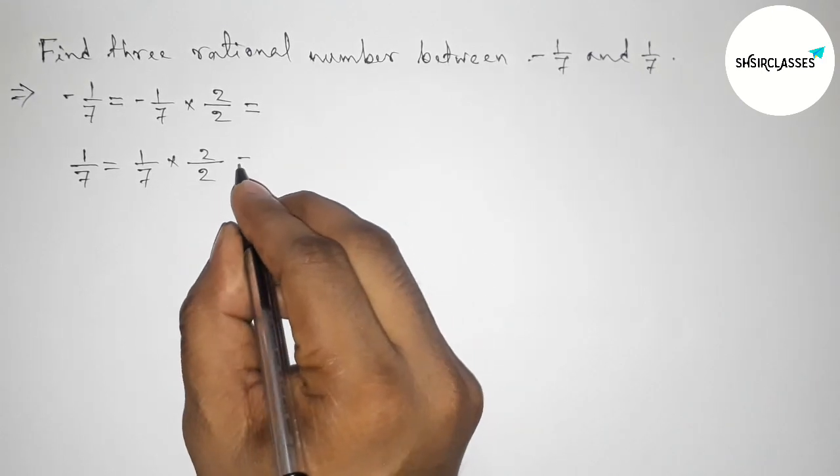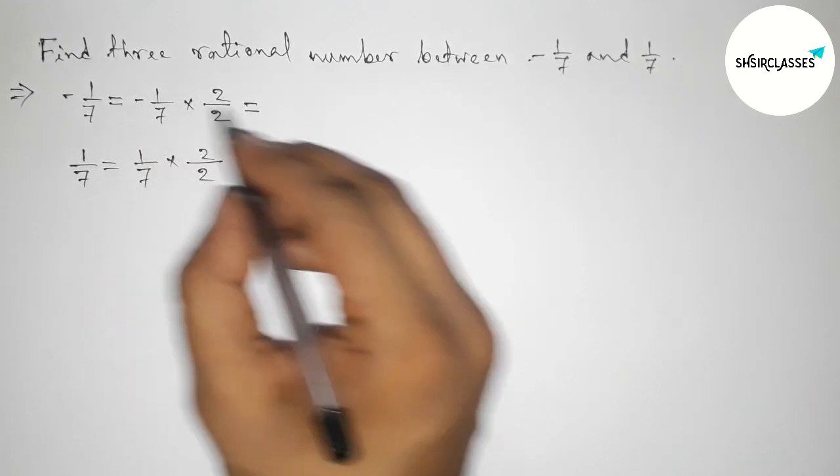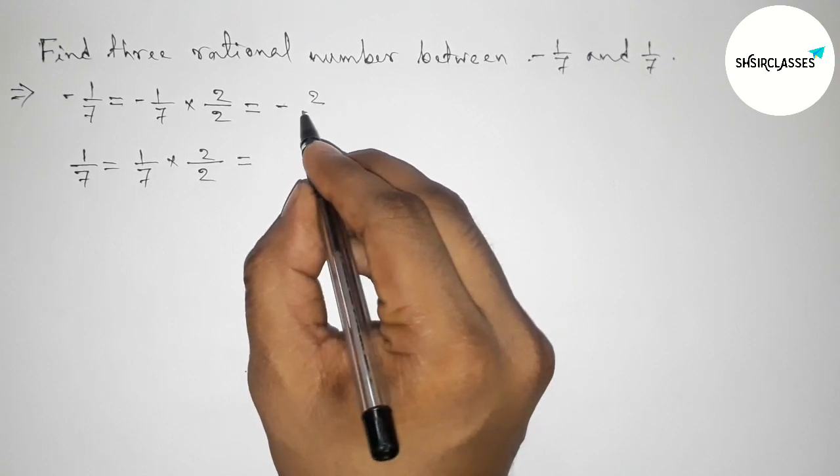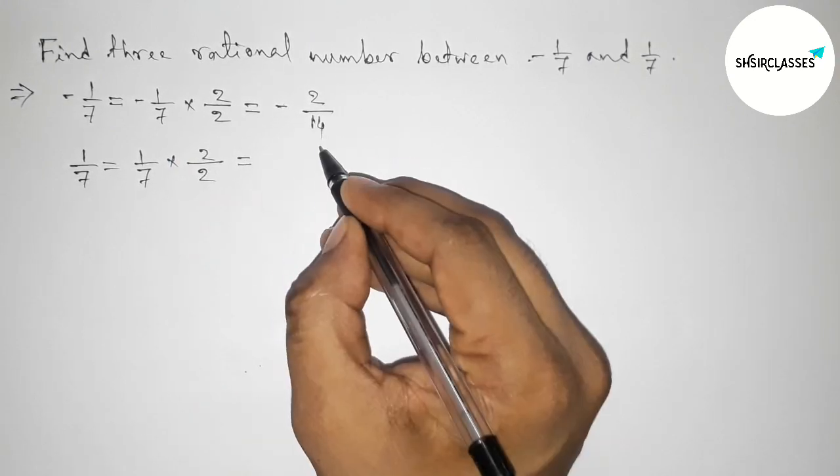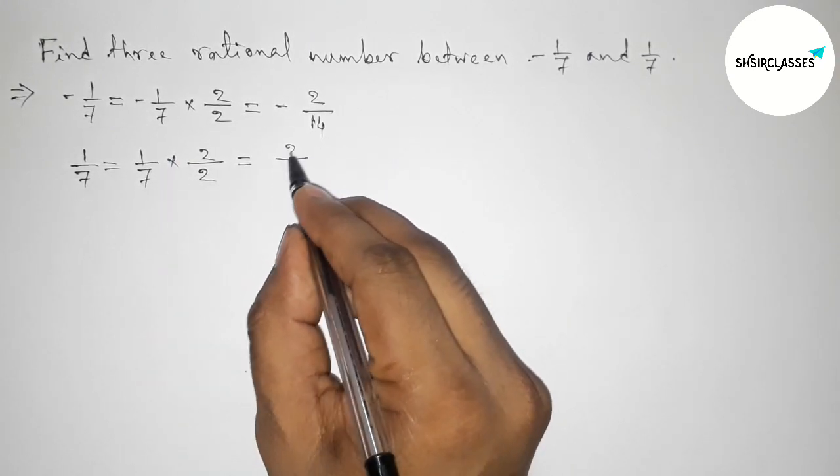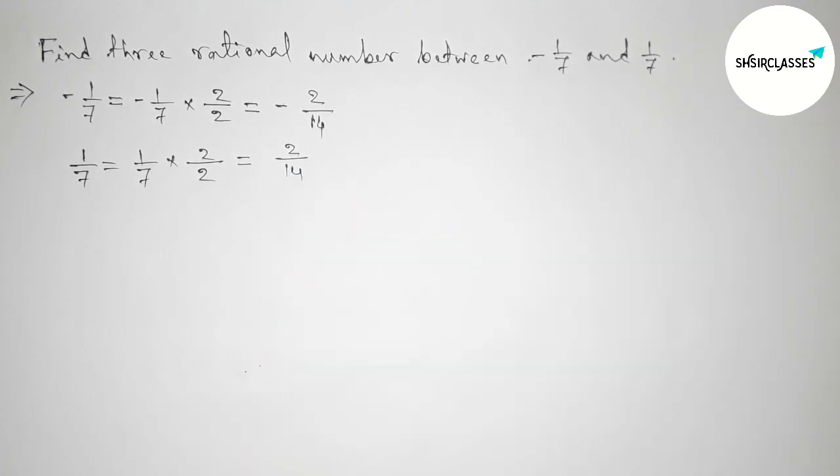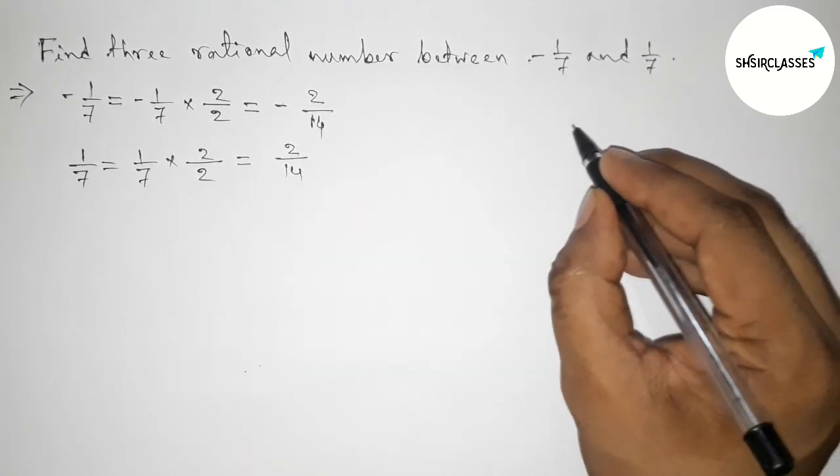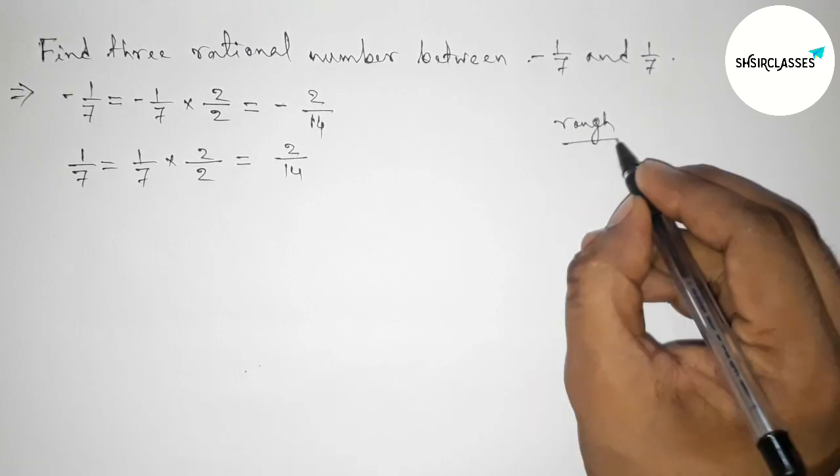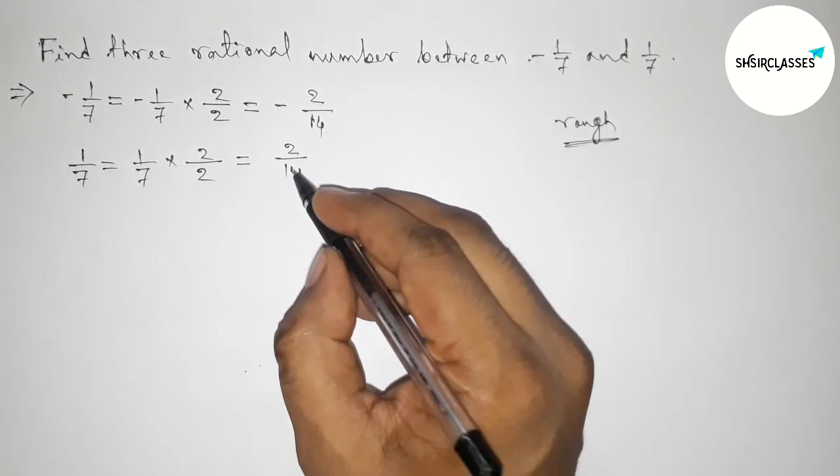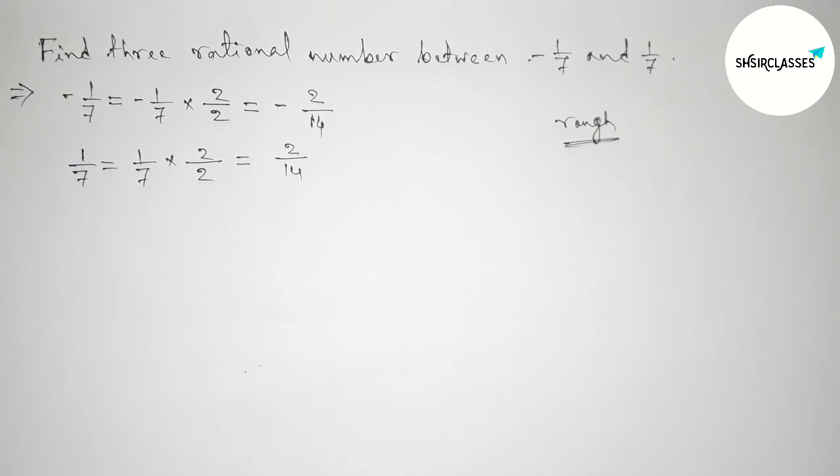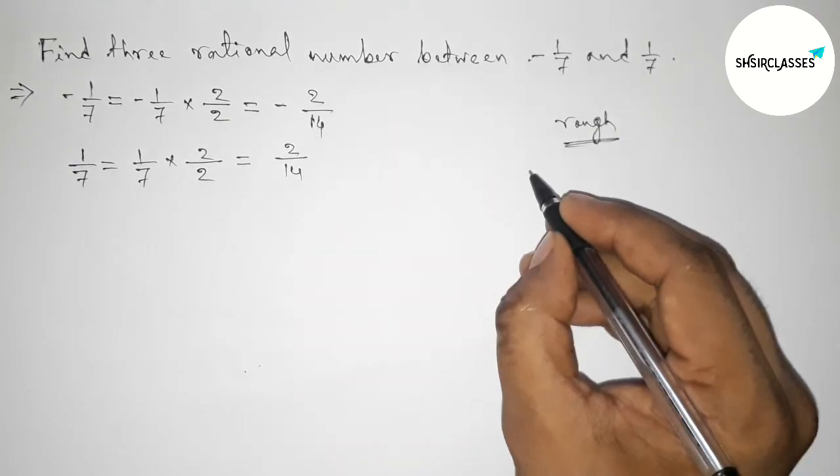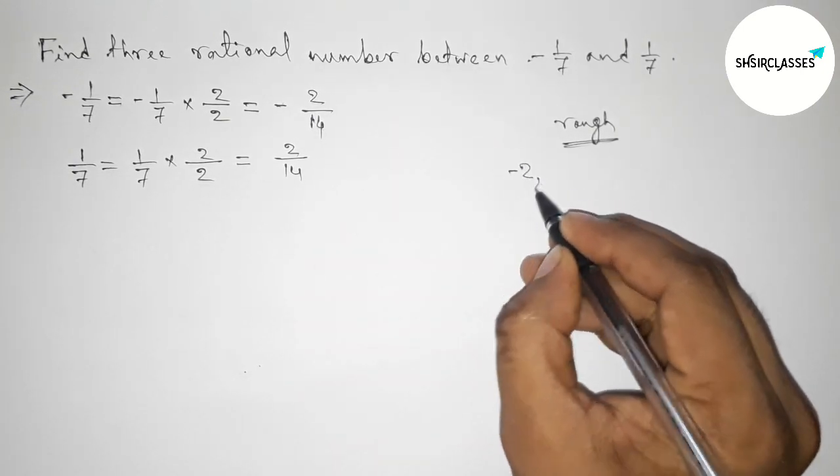Okay, so now simplifying this, so this is -2/14 and here 2/14. Okay, so now roughly discussing here some important calculation. So here both the denominators are same.